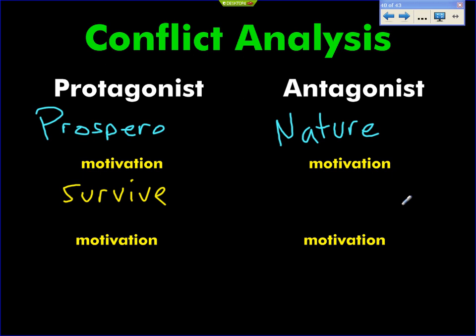When we're thinking about nature's motivation in an antagonist position, we could say it's just the natural function of nature. Nature insists that all living things die. Here's your happy thought for the day — the one certainty of your life is that someday you will die; everything else is up in the air. English 10 is all about happiness, especially the literature we read. Nature is a force and an antagonist because it is the force of death, and Prospero hopes to survive — probably forever — believing his wealth and power will preserve him.